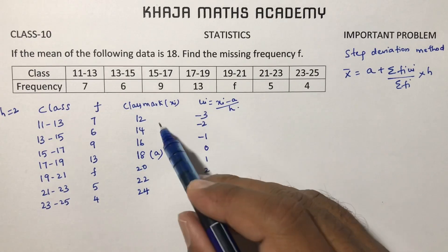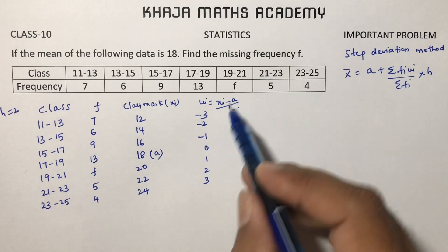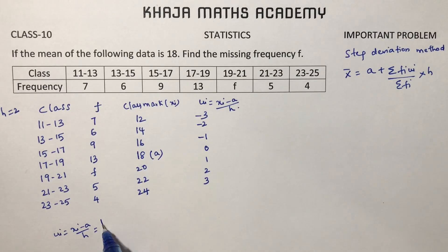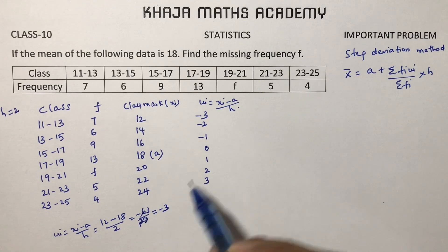First one, ui is nothing but xi minus a by h. I will calculate one or two. xi is here 12 minus a is 18 by h is 2. 12 minus 18 is minus 6 by 2. 2 times 1, 2 times 3, so it is minus 3.